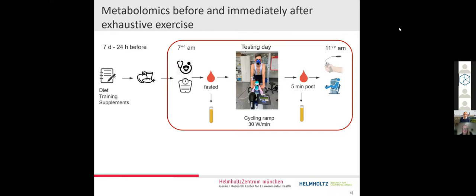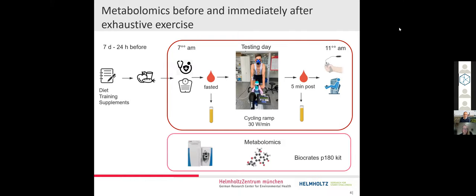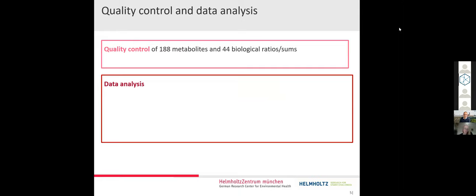The fasted and the five minutes post-exercise blood sample were centrifuged and the serum was harvested, and then we did a targeted metabolomics analysis using the Biocrates P180 kit. From the targeted analysis of the P180 kit, we got 188 metabolites and 44 biological ratios which were quality controlled. After quality control, we had 151 metabolites and 43 ratios remaining for imputation and data analysis.